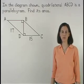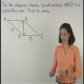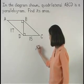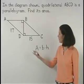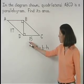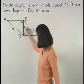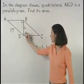Remember that the formula for the area of a parallelogram is base times height. We can see that its base is 15, but we don't know the height, which is represented by segment BD.